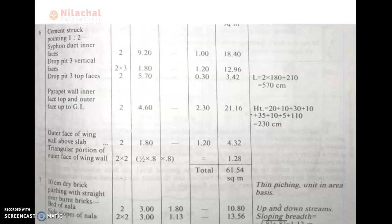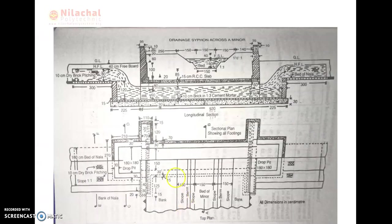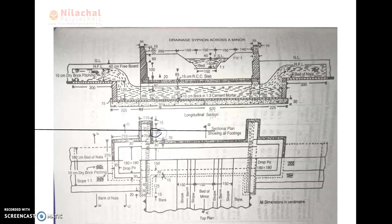The abutment slab is two numbers. The outer piece of wing valve is considered with length 1.80 meters and height 1.20 meters. The outer piece means this field — this is the height, this is the part of wing valve — the height is 1.20 meters and the length is 1.80 meters. This is the distance of the outer piece of the wing valve.